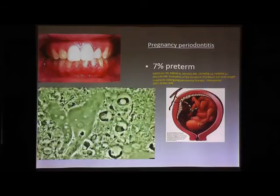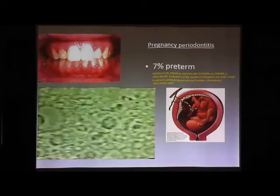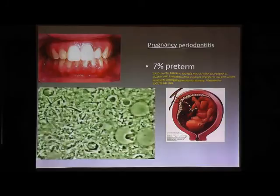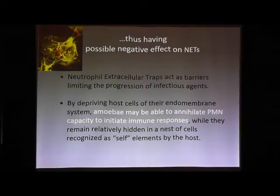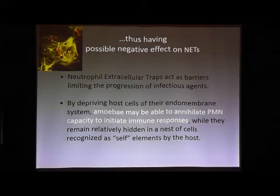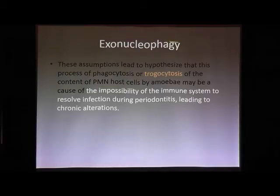It is absolutely incredible to leave those parasites in your gum, and the worst thing is dentists not telling you. All dentists should have a microscope and look at this parasite when you have periodontitis. When the neutrophil loses its nucleus it can no longer use the neutrophil extracellular trap as a barrier to infection. The amoeba annihilates this capacity to initiate an immune response, leading to chronic alteration and bone loss.